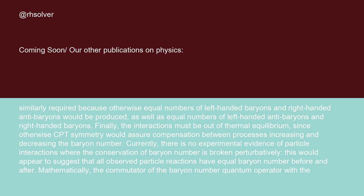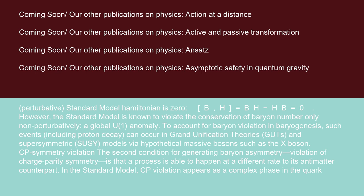Currently, there is no experimental evidence of particle interactions where the conservation of baryon number is broken perturbatively. This would appear to suggest that all observed particle reactions have equal baryon number before and after. Mathematically, the commutator of the baryon number quantum operator with the perturbative standard model Hamiltonian is zero: [B,H] = BH - HB = 0.